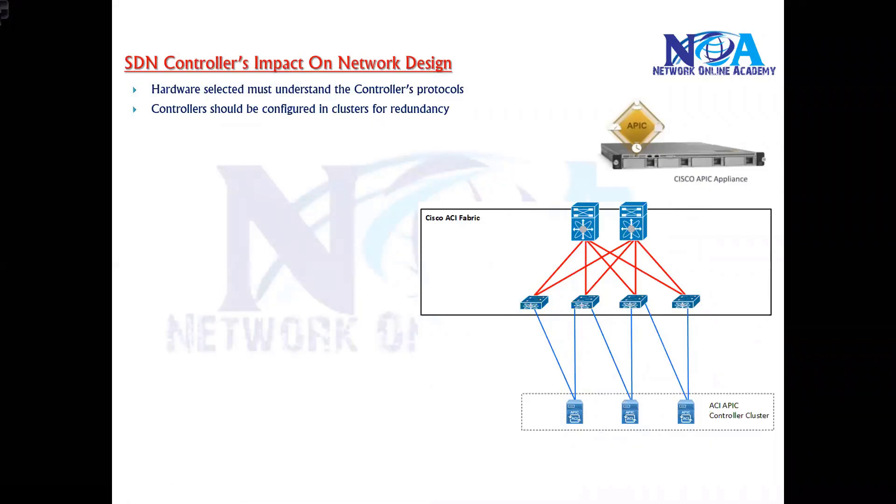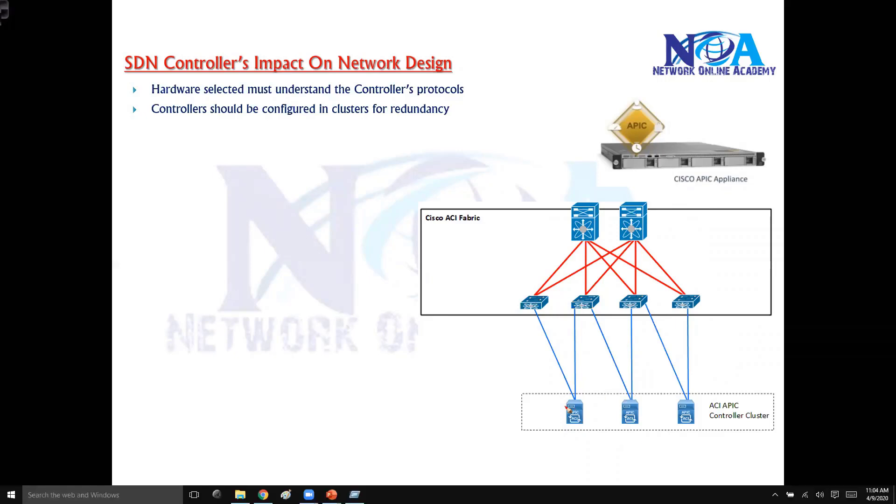The next step is controllers should be configured in clusters for redundancy. The clusters are nothing but, if you have just one controller and that controller goes down, then that is going to be a single point of failure and you don't want that. So it's very important to plan the clusters for redundancy, where you are going to use multiple SDN controllers and group them in the cluster.